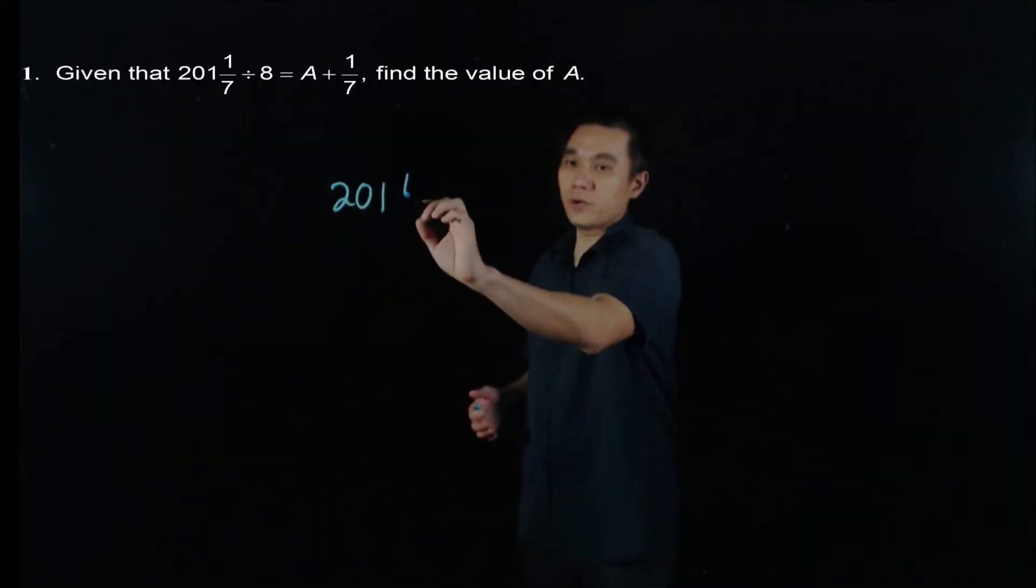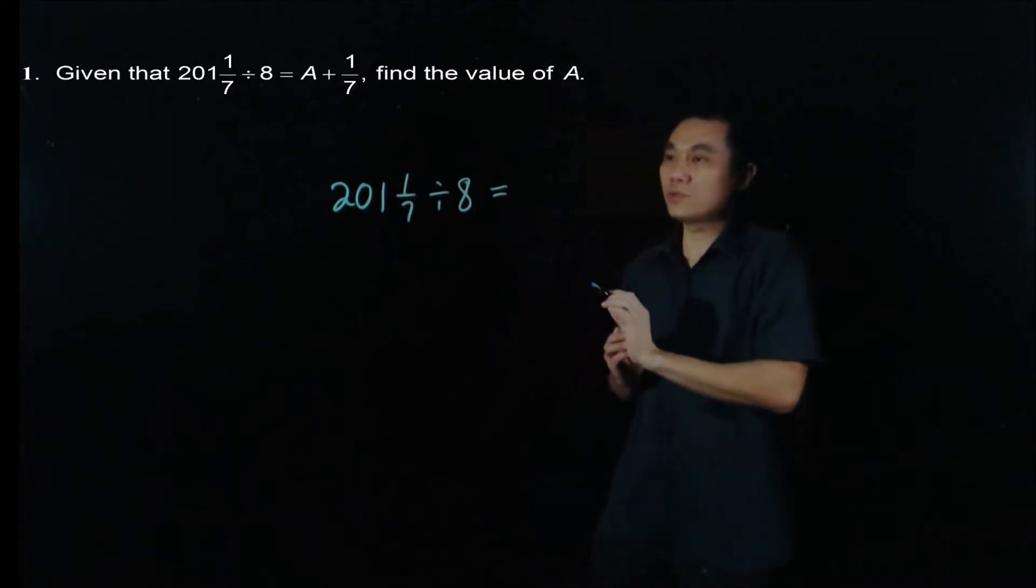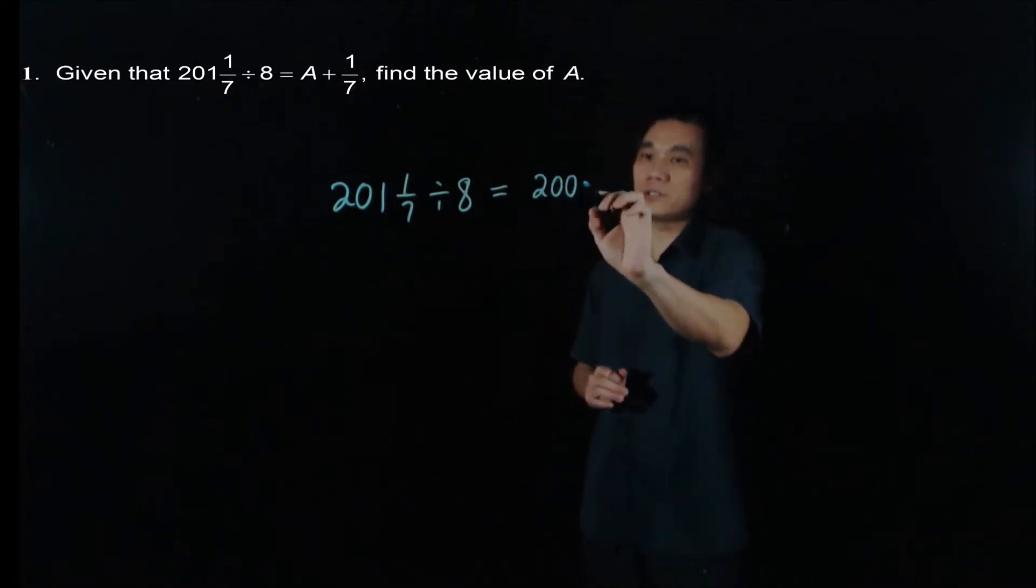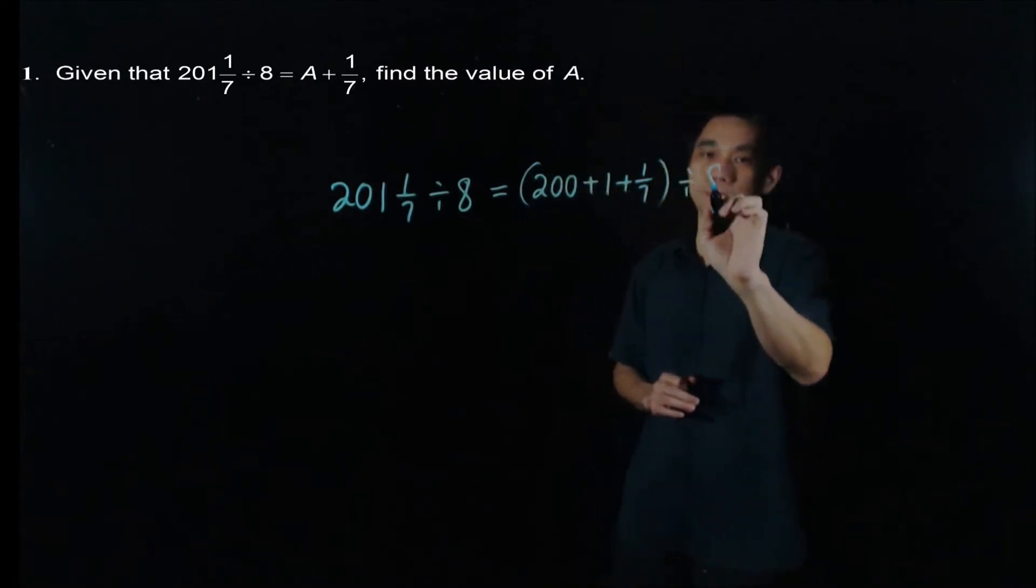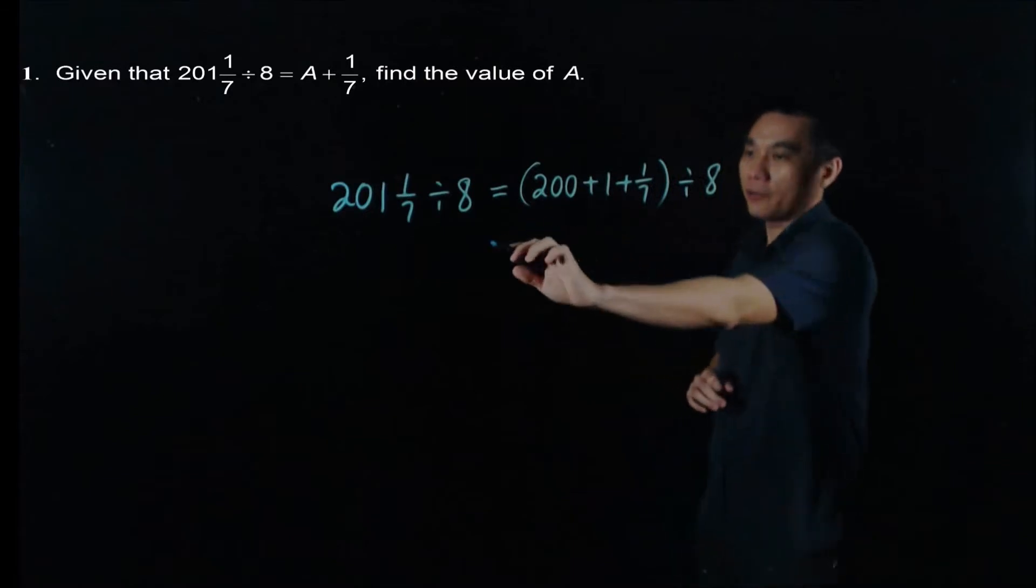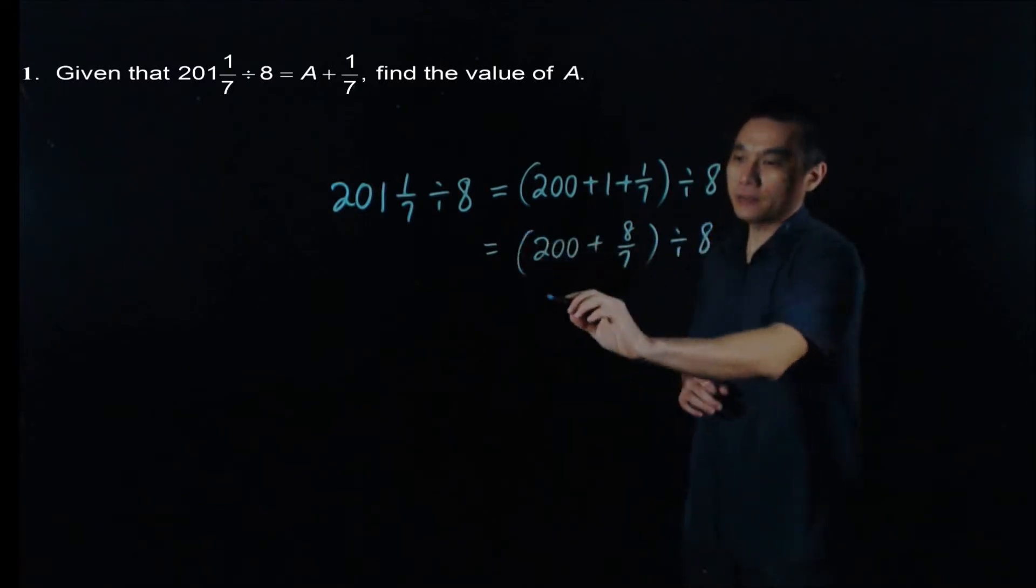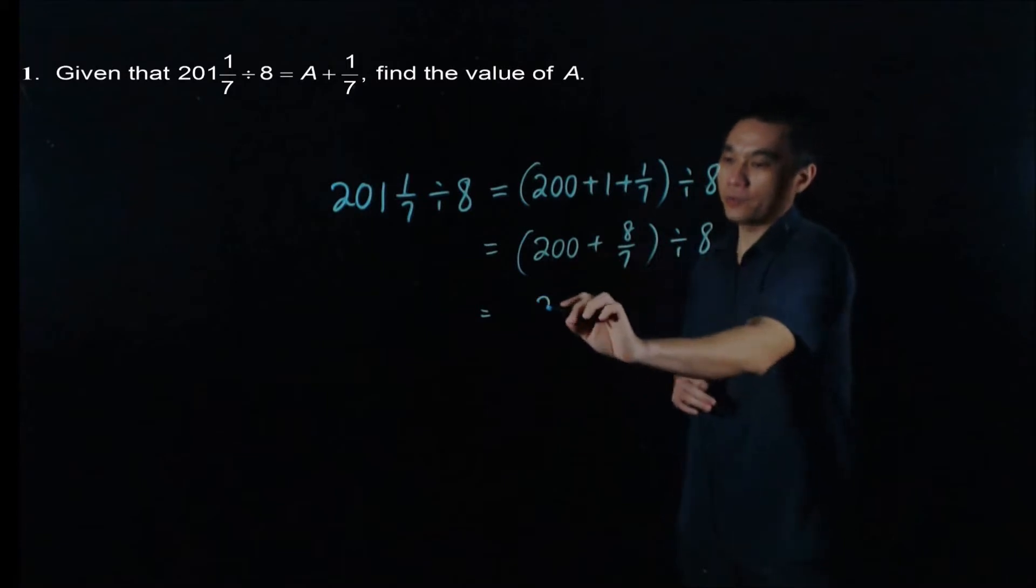We start with 201 1/7 ÷ 8 and we know that 201 1/7 can be written as 200 plus 1 plus 1/7 divided by 8. If you have this, it means that this is 200 plus 8/7. If you divide by 8, it means that 200 divided by 8, you have 25.